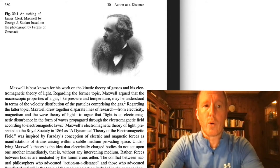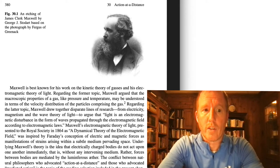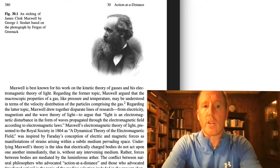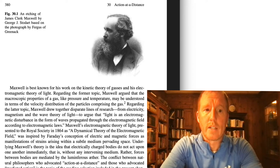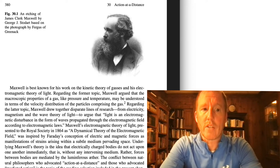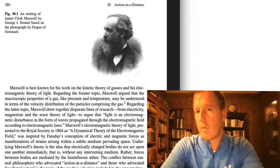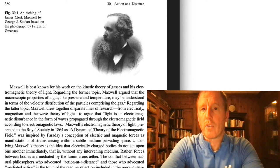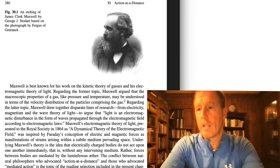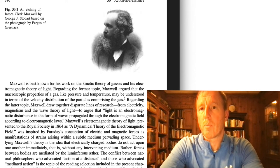Maxwell is best known for his work on the kinetic theory of gases and his electromagnetic theory of light. Regarding the kinetic theory of gases, Maxwell argued that the macroscopic properties of a gas, like its pressure and temperature, may be understood in terms of the velocity distribution of the particles comprising the gas. In other words, common-sense notions like temperature, pressure, and volume of a gas in a balloon can be understood through atomic theory — treating the gas as a collection of particles zipping around with a particular distribution of speeds.